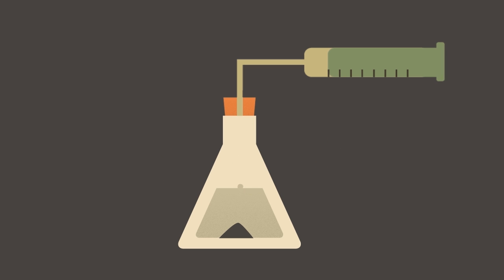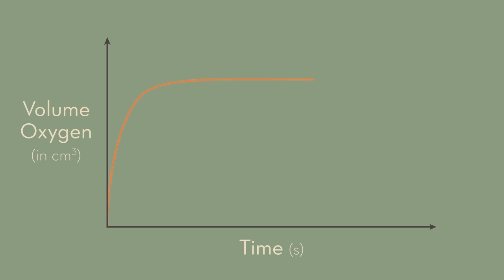The volume of oxygen evolved can be recorded at specific time intervals. Plotting the volume of oxygen produced against time will give a graph that is similar to this one right here.